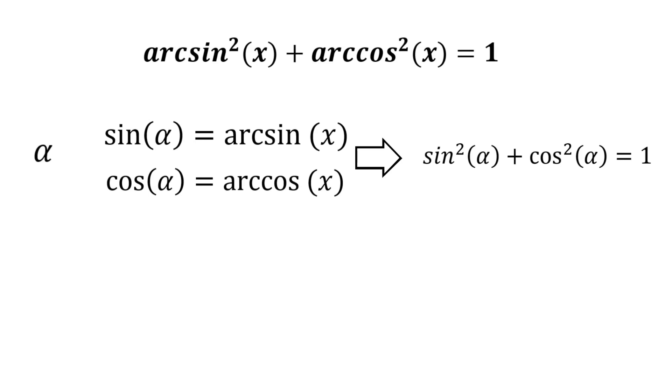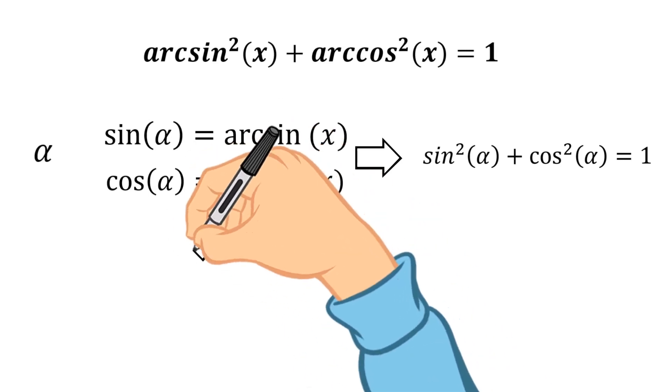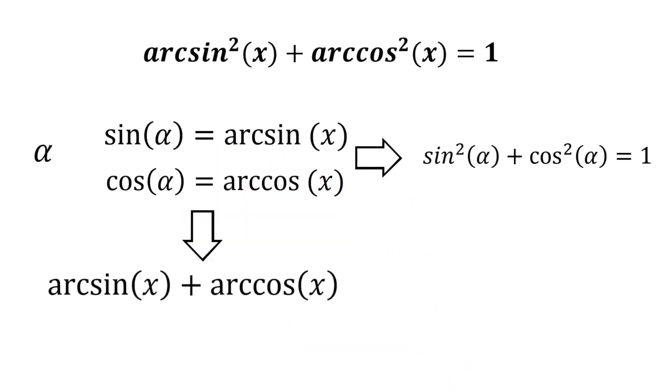So far, so good. And now, let's take a closer look at the sum of arc sine and arc cosine, which, in our case, will be equal to the sum of sine alpha and cosine alpha.